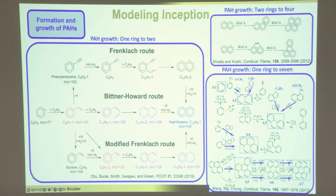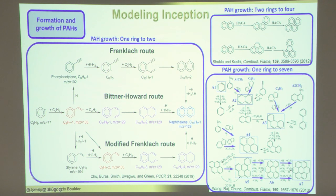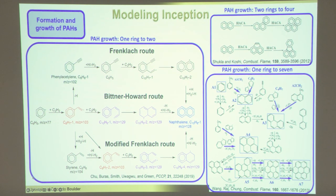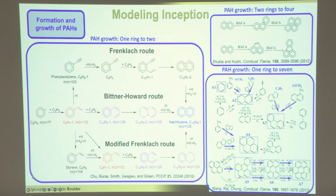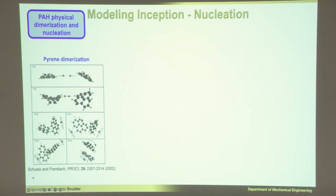One reason this type of growth is supported is that when you look at mass spec in a flame as a function of height above the burner — basically as a function of reaction time — you'll see two-carbon sequences. You'll have large peaks that look like you're adding two-carbon species, and sometimes they'll complete a ring. This is supported by data, and HACA is probably a very important mechanism.